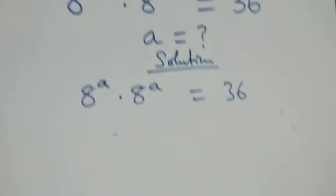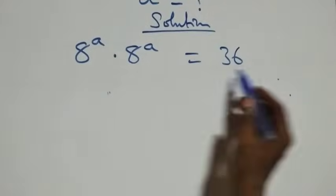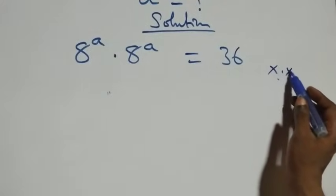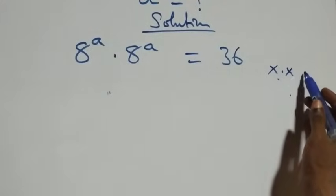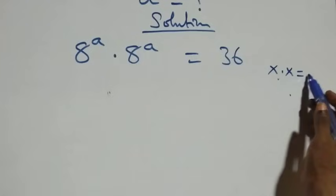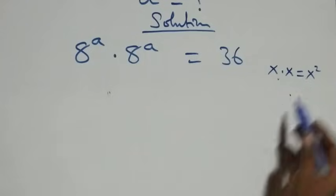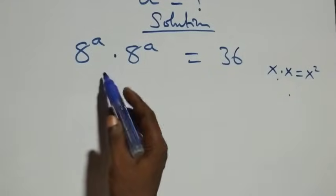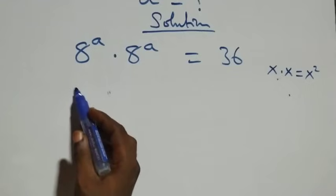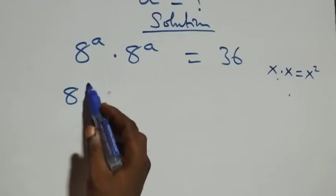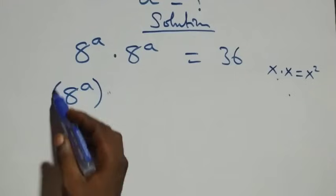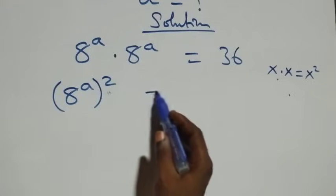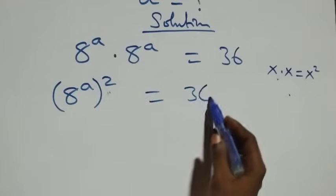What we have on this side: when we have x times x, that is the same thing as x squared. Since we have the same thing multiplying here, we can write this as 8 raised to power a, then squared, equals 36.